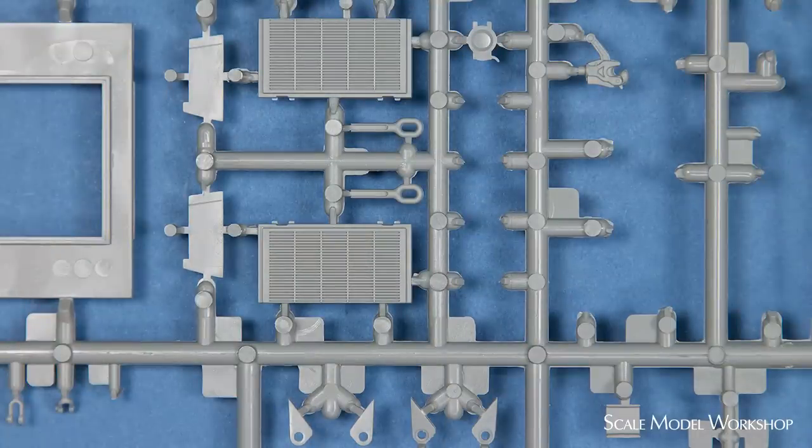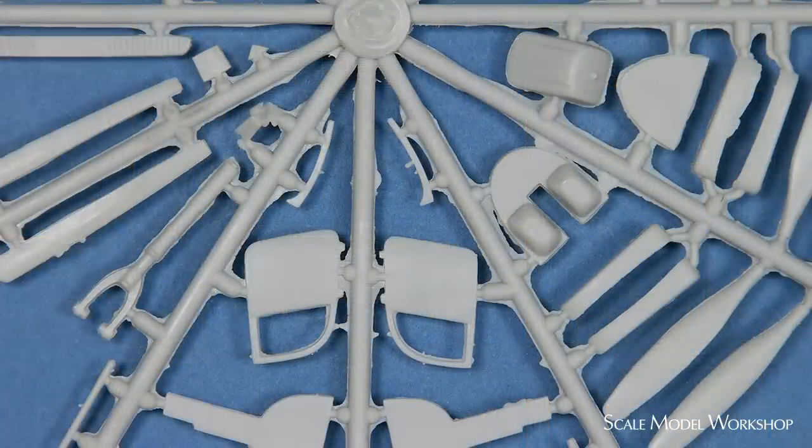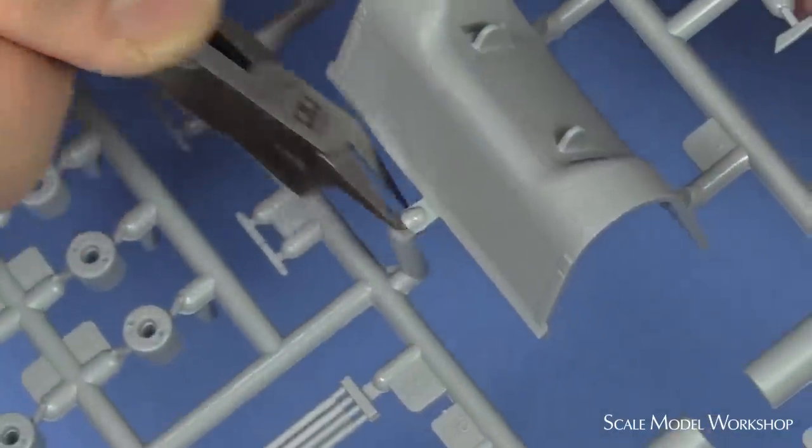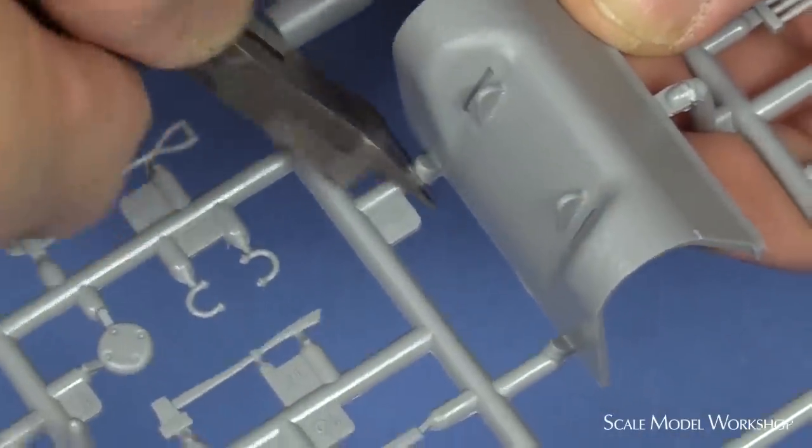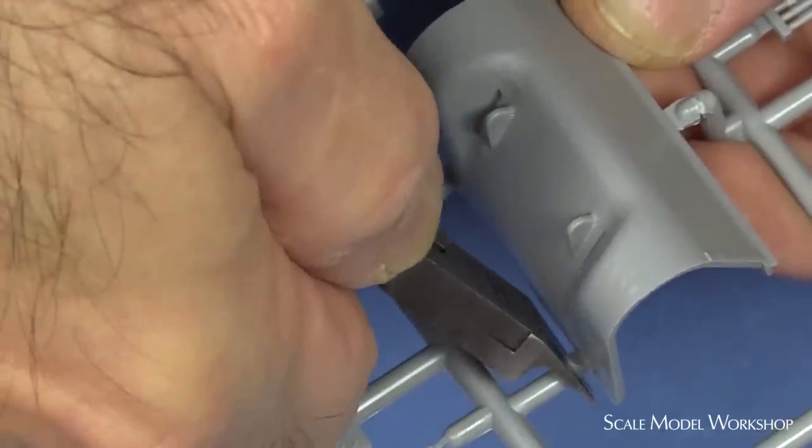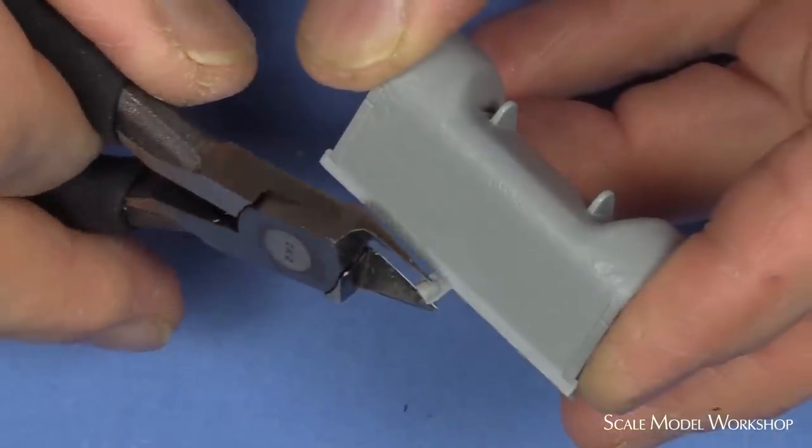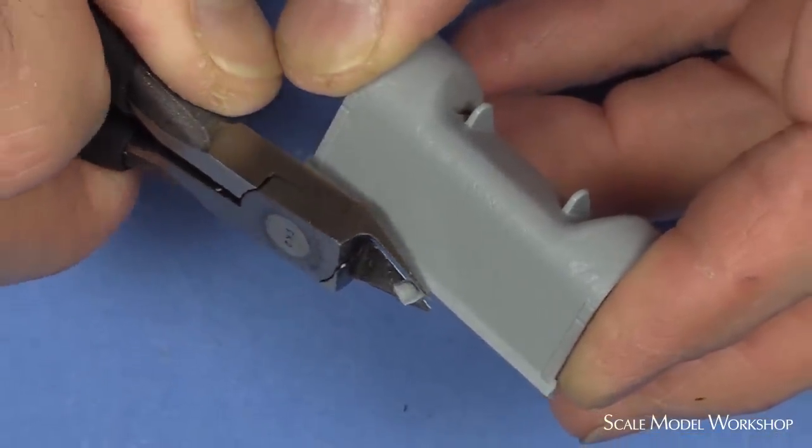Every kit's different, with different plastic, so you need to be a little flexible with your approach. In situations where you don't want to be patching tears, start your cut well away from the part and get a feel for the plastic. You may find that you won't be able to get very close to the part at all.